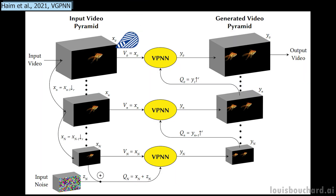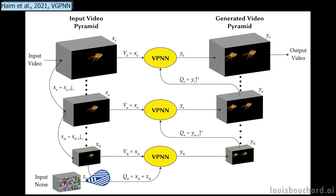The nearest neighbor algorithm. First, they downscale the image in a pyramid way, where each level is of lower resolution than the one above. Then, they add random noise to the coarsest level to generate a different image, similar to what GANs do in the compressed space after encoding the image. Note that here I will say image for simplicity, but since it's applied to videos, the process is made on three frames simultaneously, adding a time dimension.